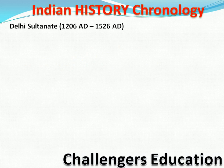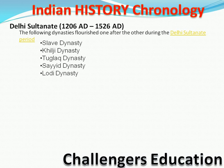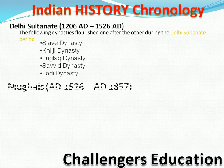Iske baad jo hum padhenge that will be Delhi Sultanate. Delhi Sultanate mein jo padhne wale hain woh hain — Tughluq, Sayyid aur Lodhi dynasty — yeh sab dynasties hum padhenge. Yeh sab dynasties 1526 tak hongi.